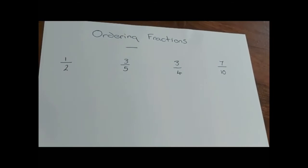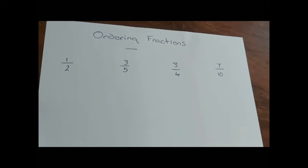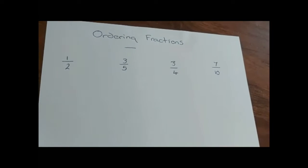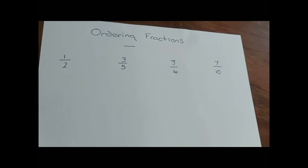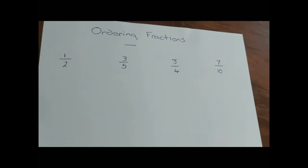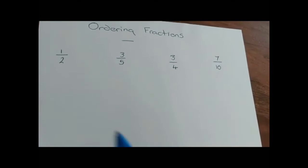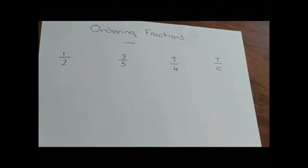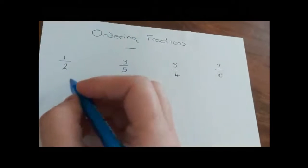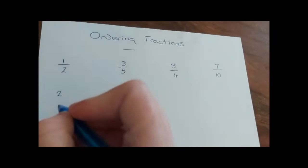Before we can put anything into order, we need to make sure all the denominators are the same — the same as when we're adding and subtracting fractions. So what we need to do is find our common denominator. We look at the denominators in all of the fractions and write out the times table for each of those denominators, starting with the two times table.